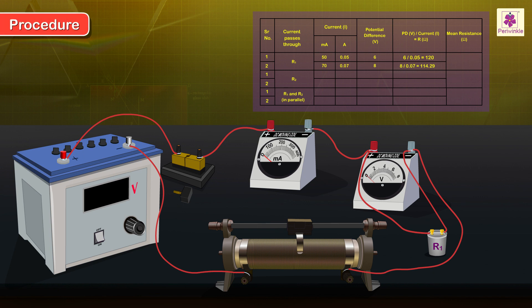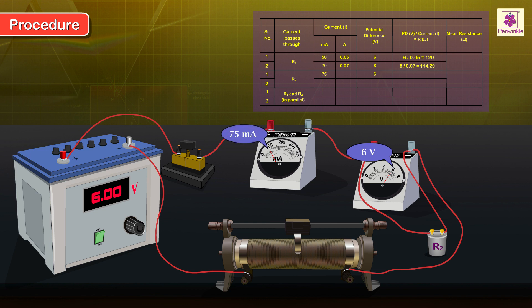Procedure: Replace R1 with R2 in the circuit and switch on the current. Adjust the rheostat whenever necessary and obtain two sets of readings by applying different values of PD.